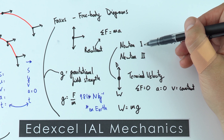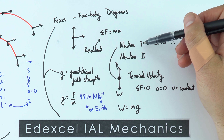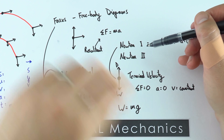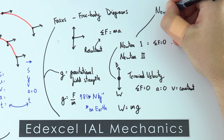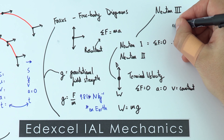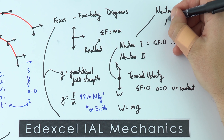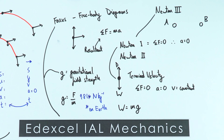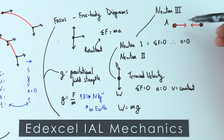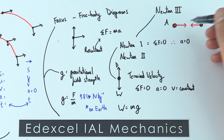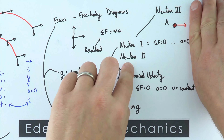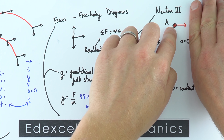Newton's first and second laws both concern one object and the forces it experiences. But we also have Newton's third law, which is about the forces experienced by two different objects — let's call them object A and object B. Newton's third law states that the force of object A on object B is equal and opposite to the force of object B on object A. These forces are the same type, the same size, and act between the two objects, whereas Newton's first and second laws only consider forces on one object.